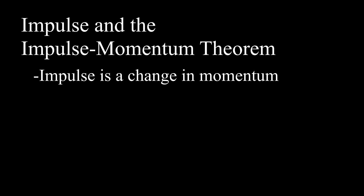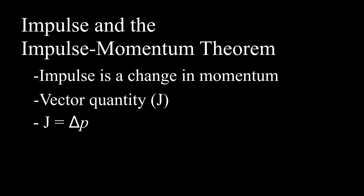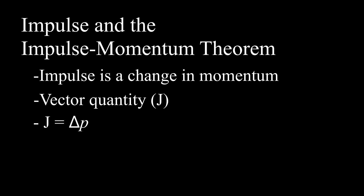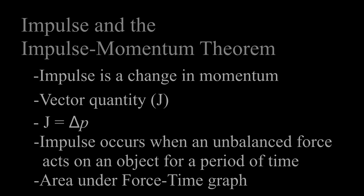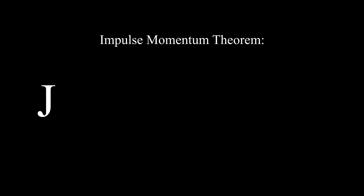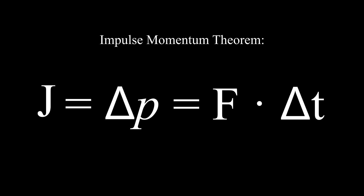Change of momentum is classified as impulse, which is represented by the letter J. J equals delta P, meaning that J, which stands for impulse, is equal to the change in momentum. Impulse occurs when an unbalanced force acts on an object for a period of time. An impulse is also the area under the force-time graph.